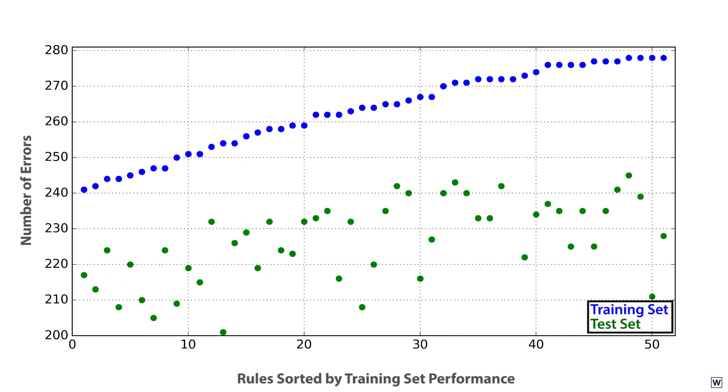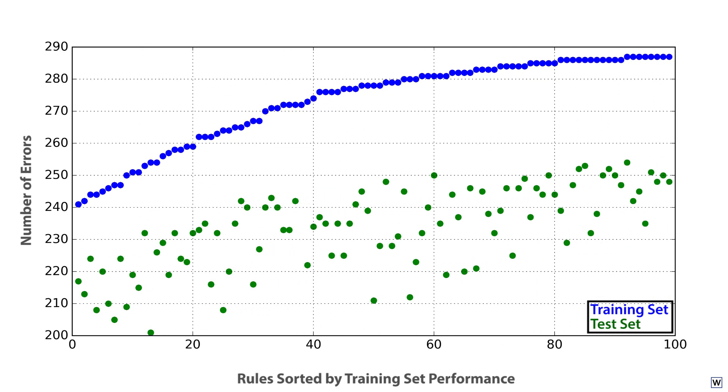As we move further away from our best-performing rule on our training set, we do see the trend we expect. Rules that don't do as well on our training set don't do as well on our test set. But the big point here is that any of our top 10 or 20 performing rules are equally valuable, given the limitations of our data.